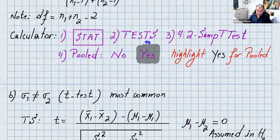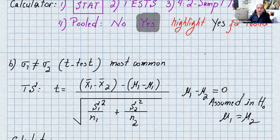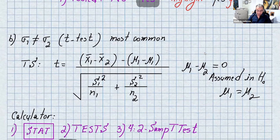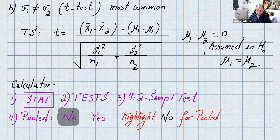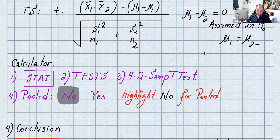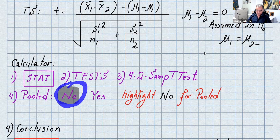If the problem does not mention equal standard deviations, assume sigma1 is not equal to sigma2 — this is the most common case. The test statistic is t equals (x̄1 minus x̄2) minus 0, over the square root of s1 squared over n1 plus s2 squared over n2. On the calculator, go to STAT, TEST, scroll to number 4, two-sample t-test, and highlight no for pooled.